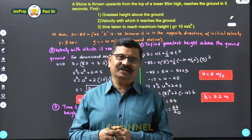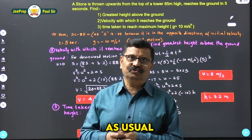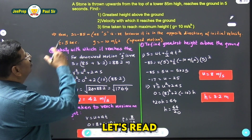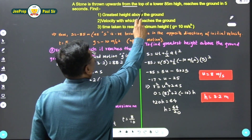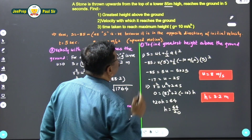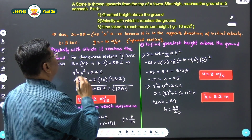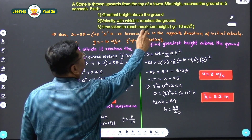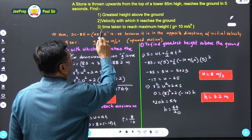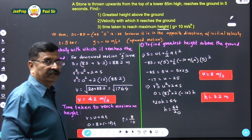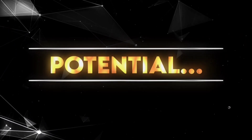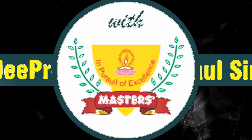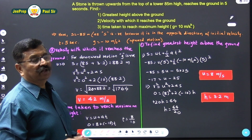Hello students, welcome to our JEPrep channel. Today we will be doing one problem on motion under gravity. A stone is thrown upward from the top of a tower 85 meters high. It reaches the ground in 5 seconds. Find: one, the greatest height above the ground; two, the velocity with which it reaches the ground; and three, the time taken to reach the maximum height.